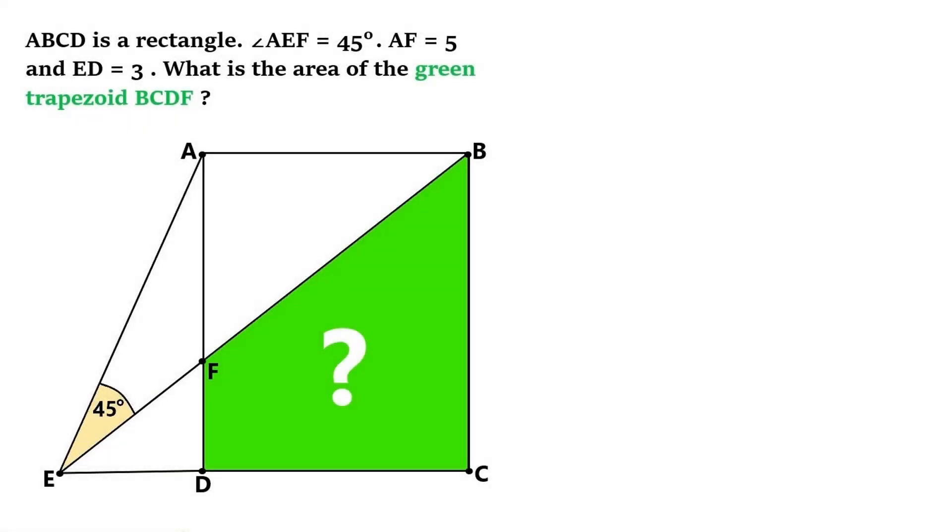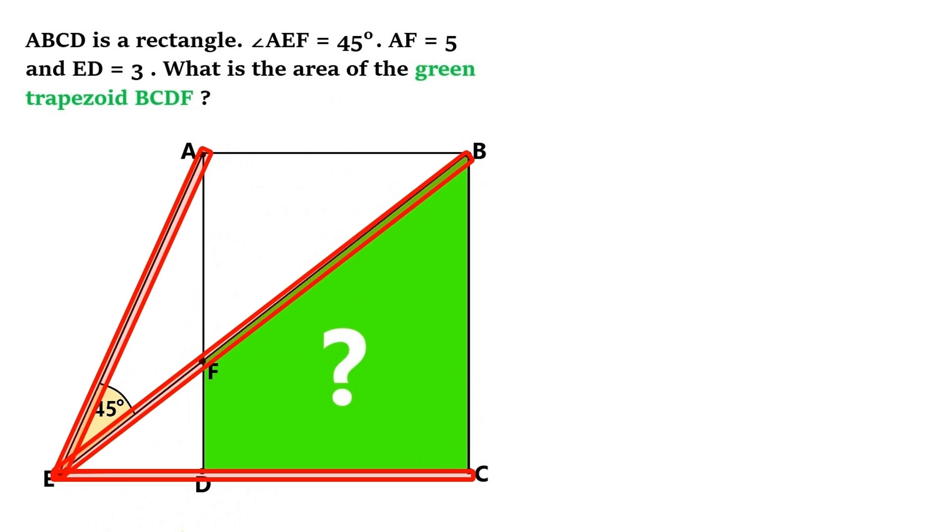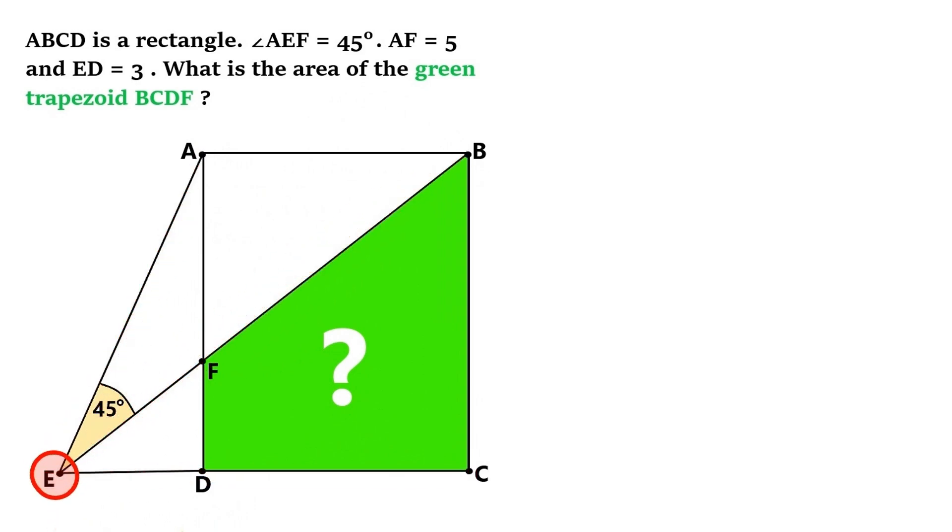In this truly exciting geometry problem, we got this rectangle ABCD. And these three lines extend from the rectangle's corners, ending at this point E.